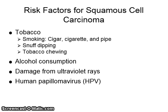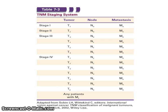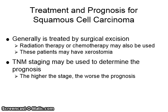Risk factors for squamous cell carcinoma are tobacco smoking, snuff dipping, tobacco chewing, alcohol consumption, damage from ultraviolet rays, and human papillomavirus. See Table 7.3 in your textbook for more information. Treatment is generally by surgical excision; radiation therapy or chemotherapy may also be used, and these patients may end up with xerostomia. TNM staging may be used to determine the prognosis — the higher the stage, the worse the prognosis.